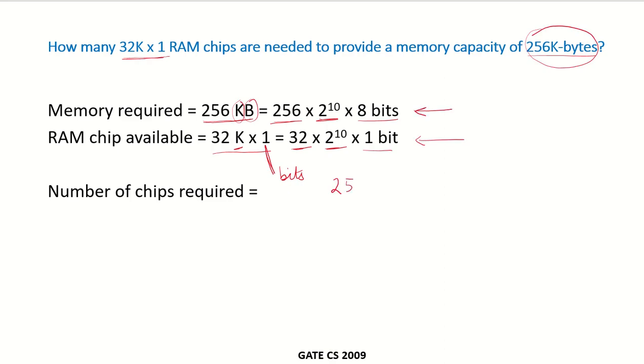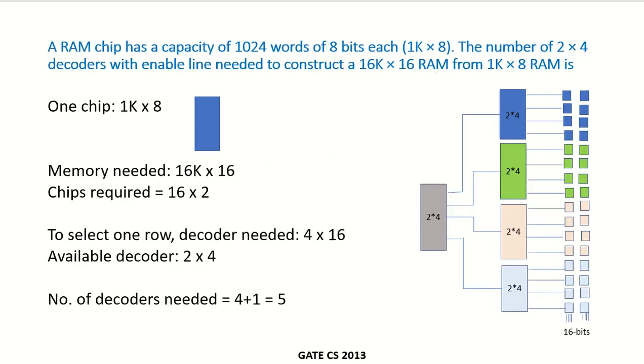256 multiplied by 2 to the power of 10 into 8 divided by 32 into 2 to the power of 10 into 1. This will give you 64. 64 chips will be required to produce this memory of the required capacity. Let's take another example.